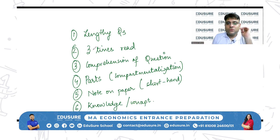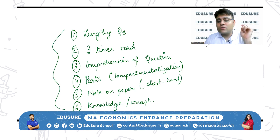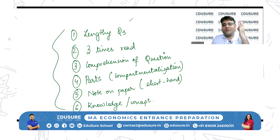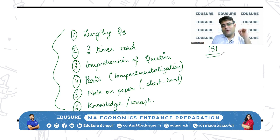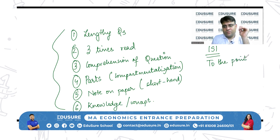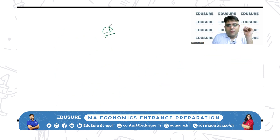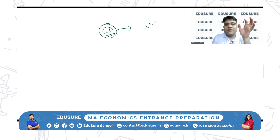Another thing — how to write the answer. Many students ask me: what should be the length of my answer? ISI will not want you to write lengthy answers. It will want you to write to-the-point answers. Do not beat around the bush. For example, in a Cobb-Douglas production function or utility function, you can solve directly for the optimal L, K or X, Y.